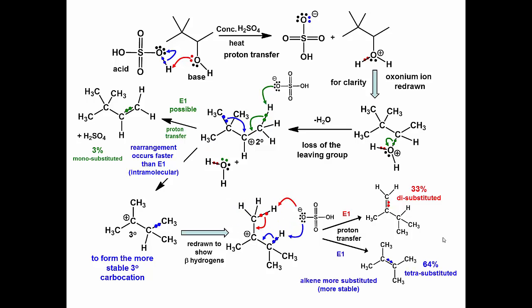Since the tetrasubstituted product is more stable, due to hyperconjugation, this alkene is formed in the greatest yield. You could also say this reaction produces the Zaitsev product in greatest yield.